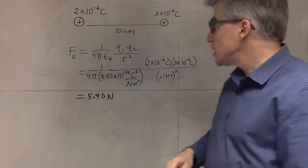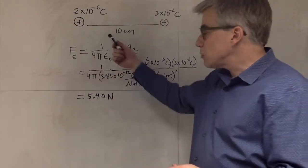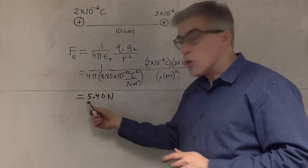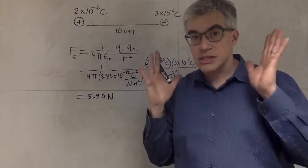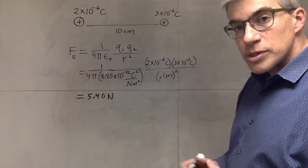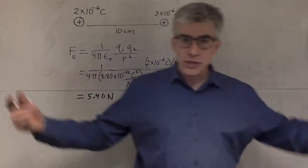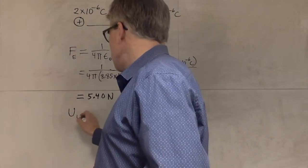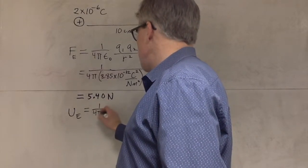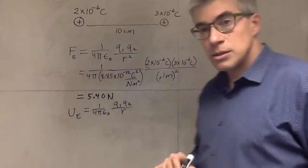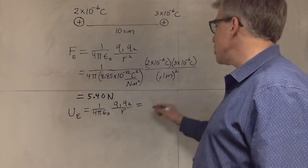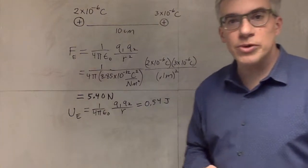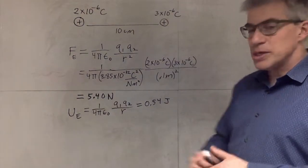If I move these to a meter apart — 10 times farther — the force would be 100 times weaker because it goes with r². So they'd be only 0.054 newtons if they were a meter apart as opposed to 10 centimeters. Distance matters a lot. How much energy is stored in this arrangement? The electric potential energy is 1/(4πε₀) · q₁q₂/r, which gives 0.54 joules — about half a joule of energy for bringing those two charges 10 centimeters together.